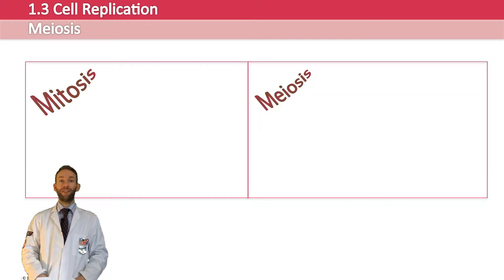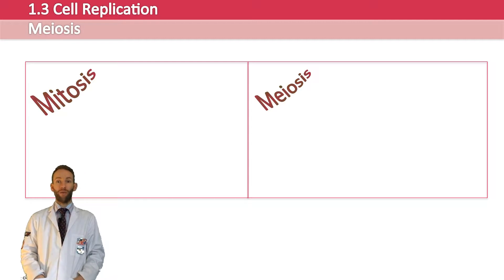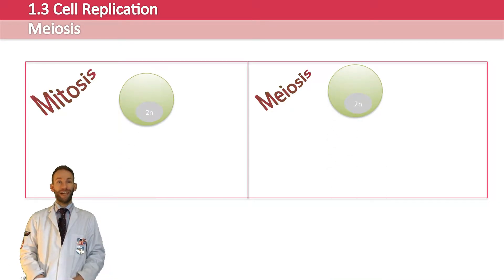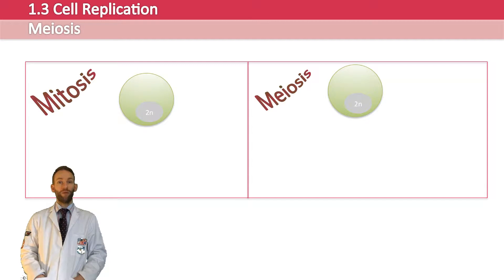There are actually two methods of cell division. Although the majority of cell division happens by mitosis, there is also another one that you need to know about which is called meiosis. This diagram shows the main differences between the two types of cell division. They both start with a normal cell which has two sets of chromosomes, a diploid cell which we refer to here as 2N.